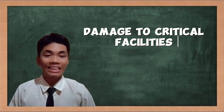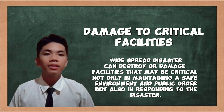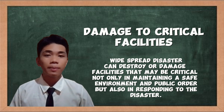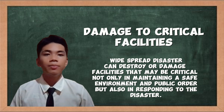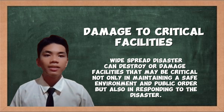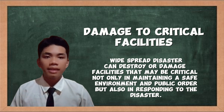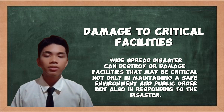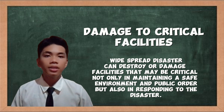Damage to critical facilities: In the aftermath of Typhoon Haiyan in Tacloban, critical facilities such as hospitals, schools, and emergency response centers suffered extensive damage, severely compromising the city's ability to provide essential services and respond effectively to the disaster. This highlighted the urgent need for DRR measures to strengthen infrastructure resilience and ensure continuity of vital services during future emergencies.